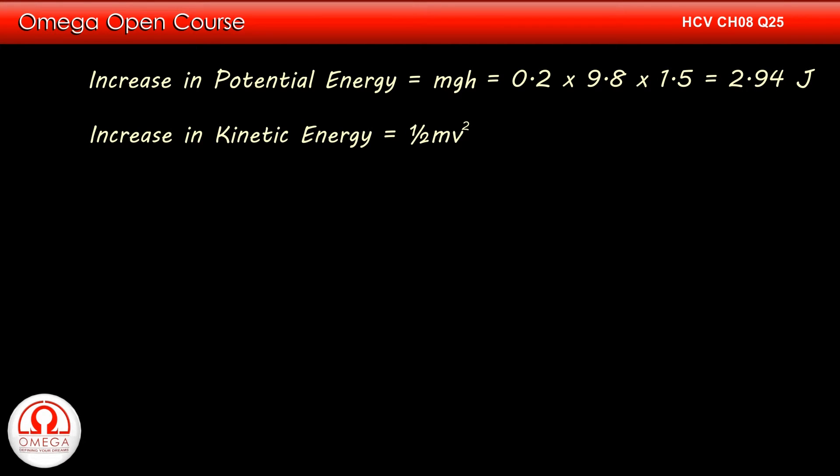The initial speed of the stone was zero and its speed at the time of projection is 3 meters per second. Therefore, increase in the kinetic energy of the stone is half mv square or half × 0.2 × 9, i.e. 0.9 J.